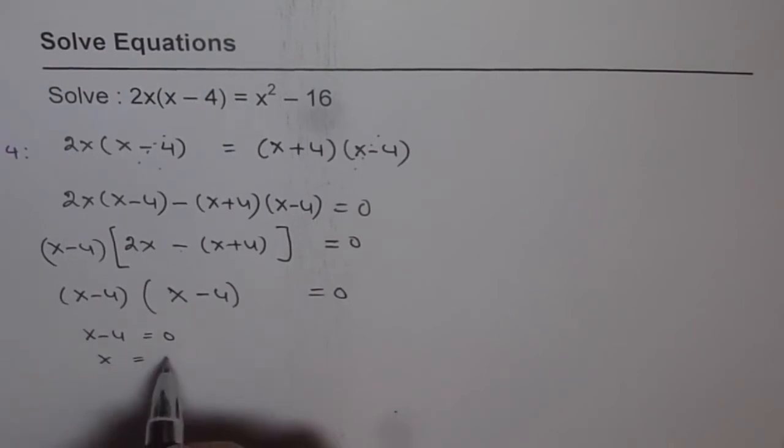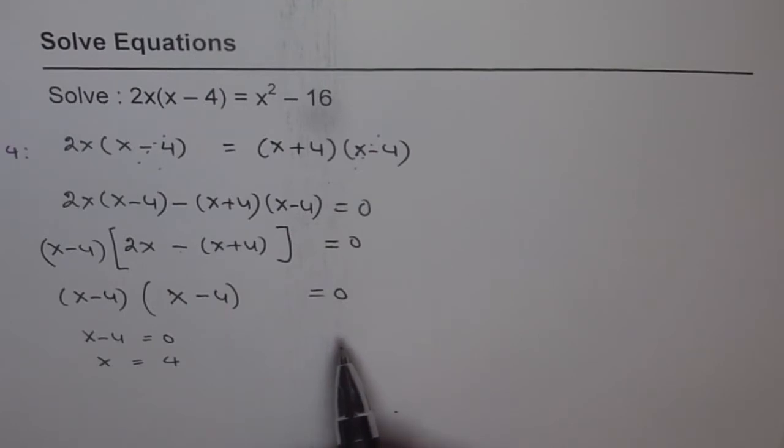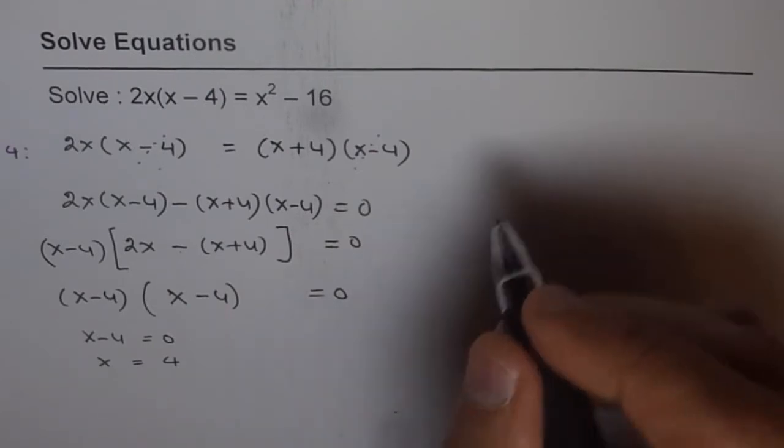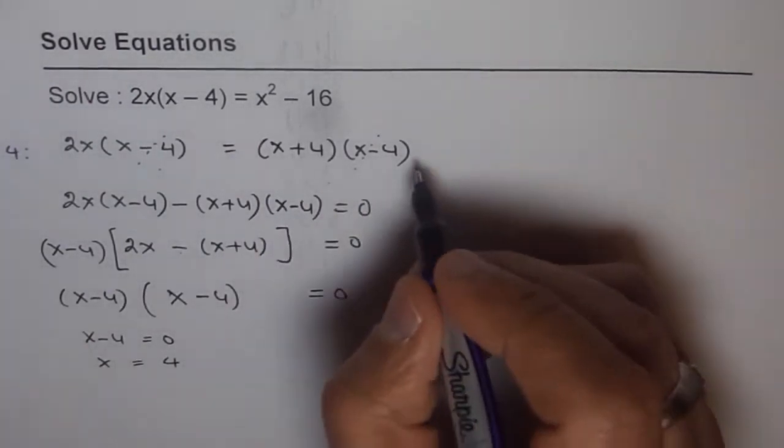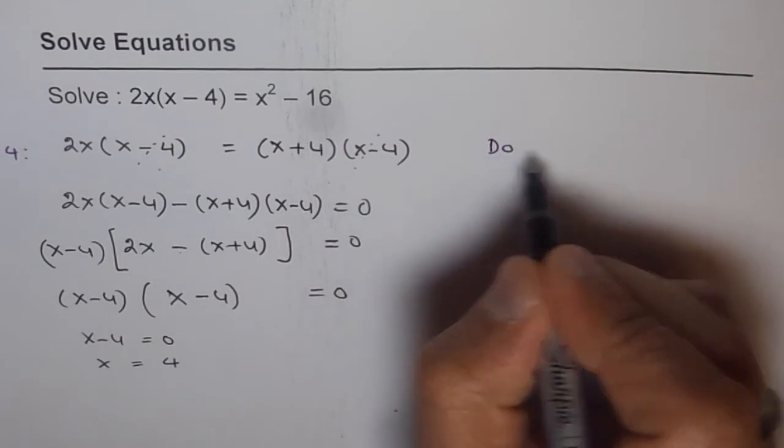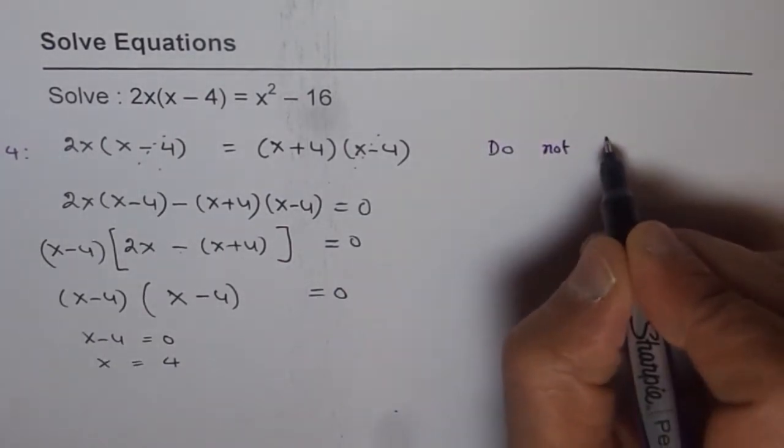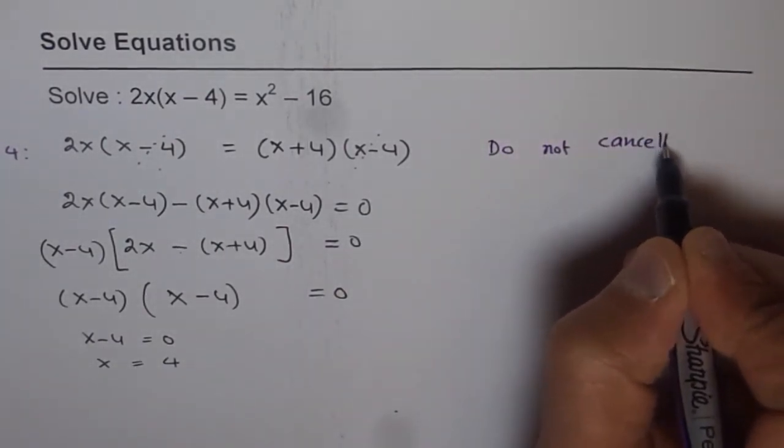you get x equals 4 as your solution. So this is the only solution for this particular equation to be true. So that is our solution. So remember one thing in this particular case or in such equations that at this stage do not cancel common factors.